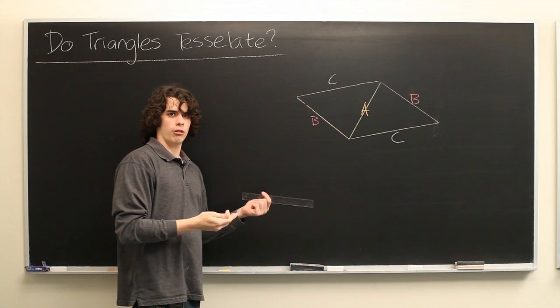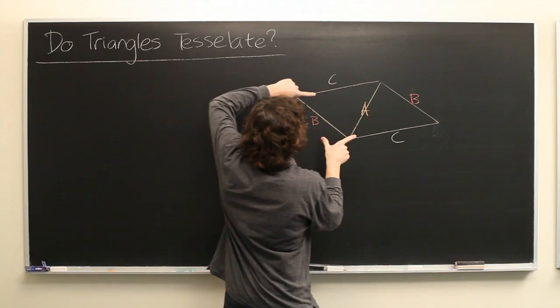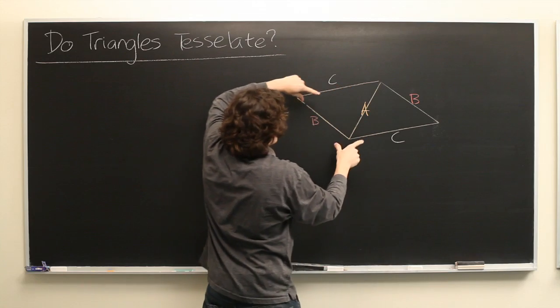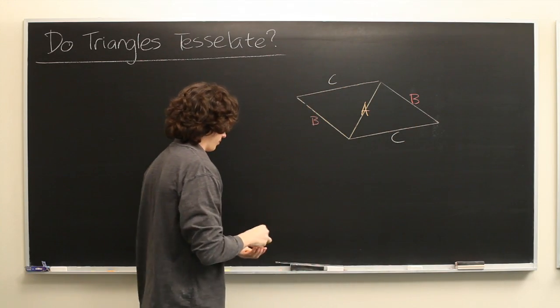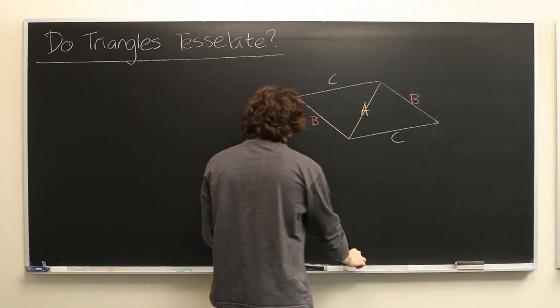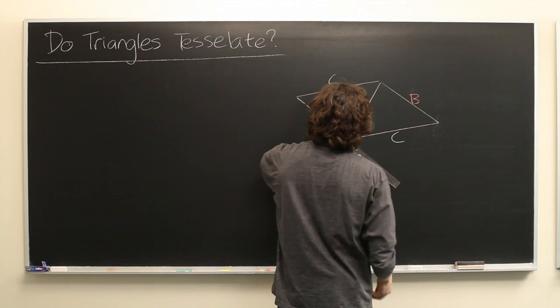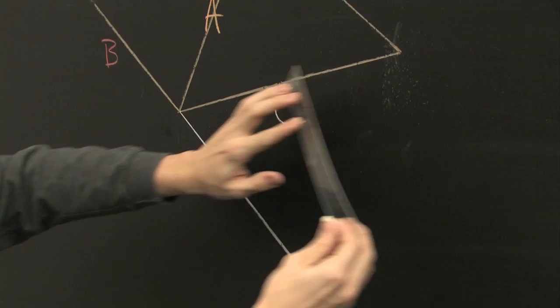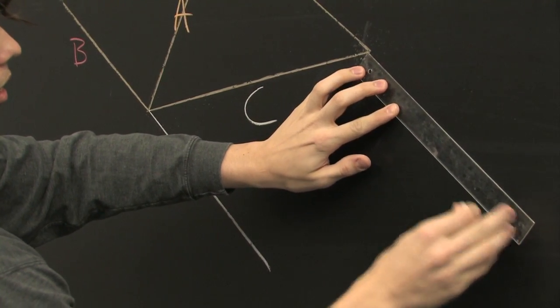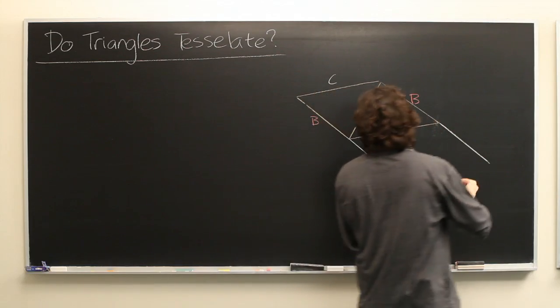But then a parallelogram can tessellate very easily. You simply slide it along either these sets of parallel lines or these sets of parallel lines. So, for example, if we were to tessellate this way, go along here, and go along here, and connect these two edges.